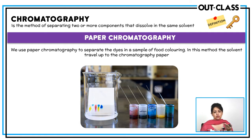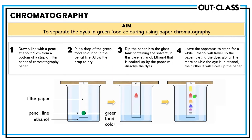Suppose we want to separate the dyes present in green food colour. We take a filter paper and draw a line with a pencil near one end — about two centimetres from the end. The line should always be drawn with pencil, because ink might be soluble in the solvent, causing it to spread and separate on the chromatogram and ruin it.